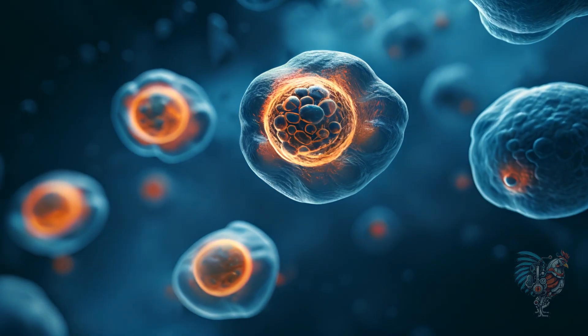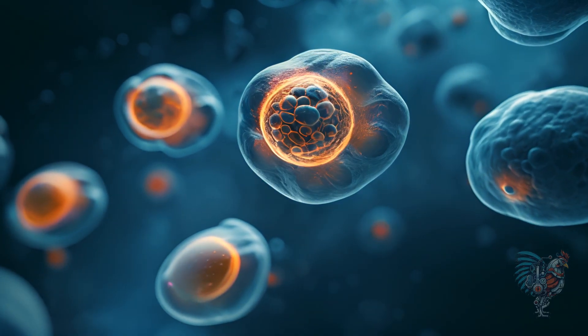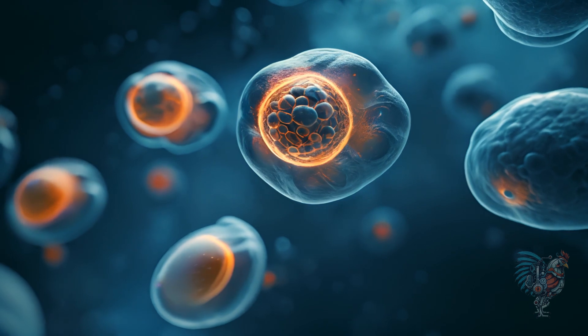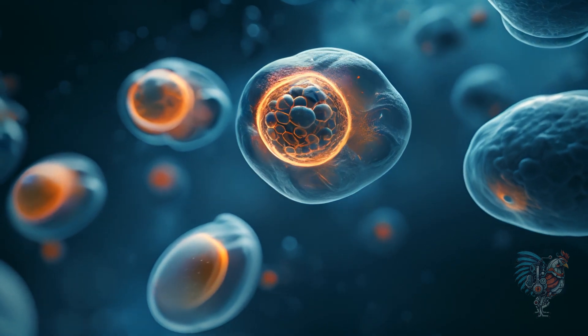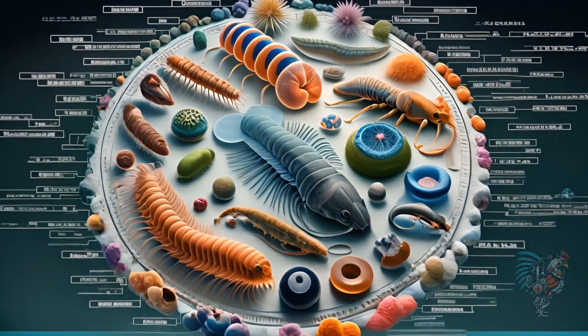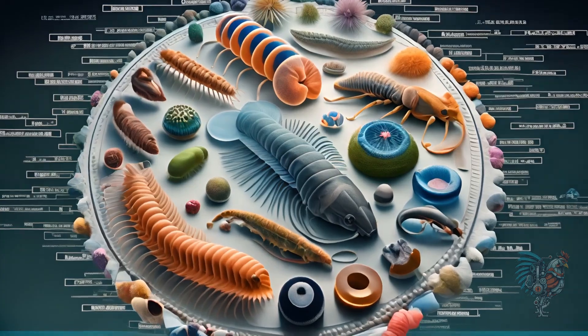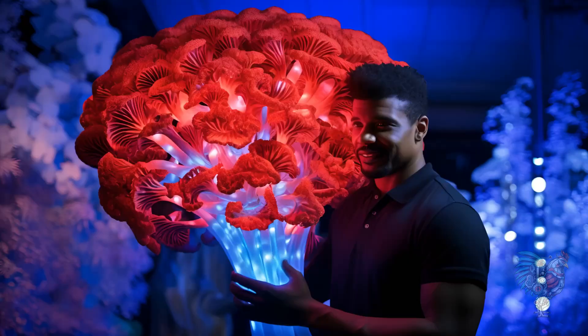Eukaryota, on the other hand, includes organisms with cells that have a nucleus. This includes plants, animals, fungi, and even some organisms we hardly ever think about.